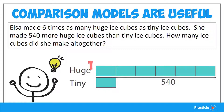First of all, we can tell the number of units that represent one of the objects being compared — in this case, the huge ice cubes. Then we are also able to tell the number of units that represent the other object being compared. In this question, we have the tiny ice cubes. So that's the second thing.